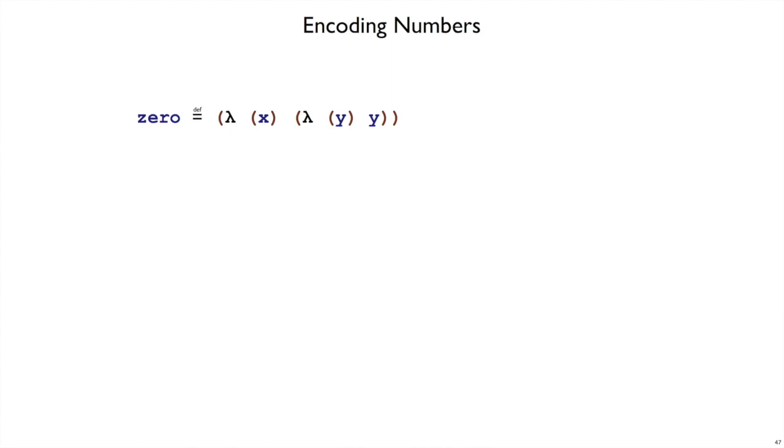If all we have is lambdas and application, that means we don't even have numbers like 0 and 1. So I'm going to encode 0, 1, and all the other positive exact integers in the same way as we did with booleans. I'm going to pick a particular pattern of lambdas to represent that number. And my choice in patterns will be good as long as I can implement operations on numbers, like addition of numbers.